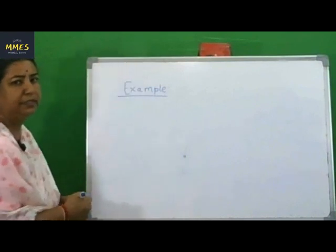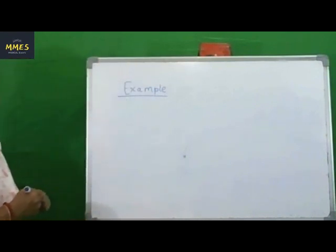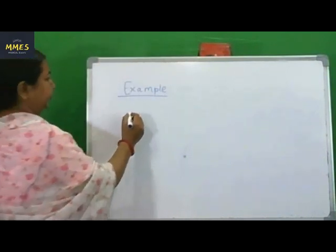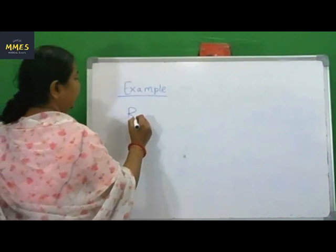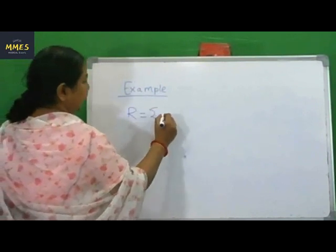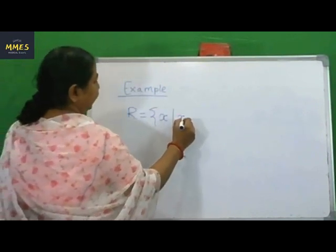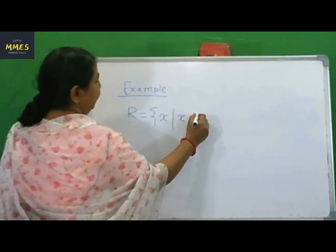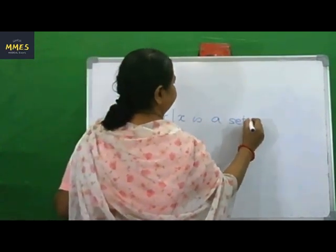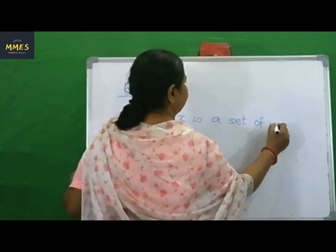R is the set of real numbers. R is equal to {X : X is a real number}.